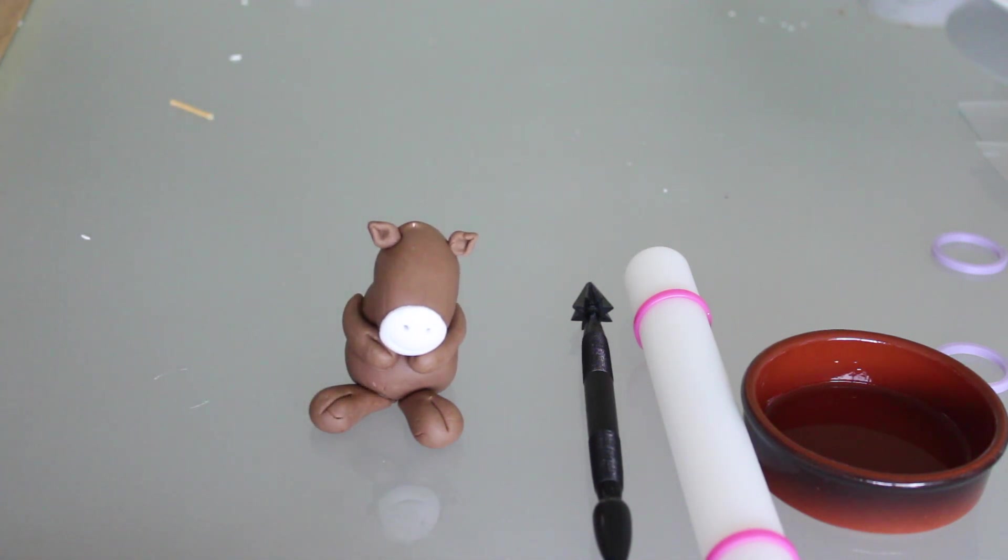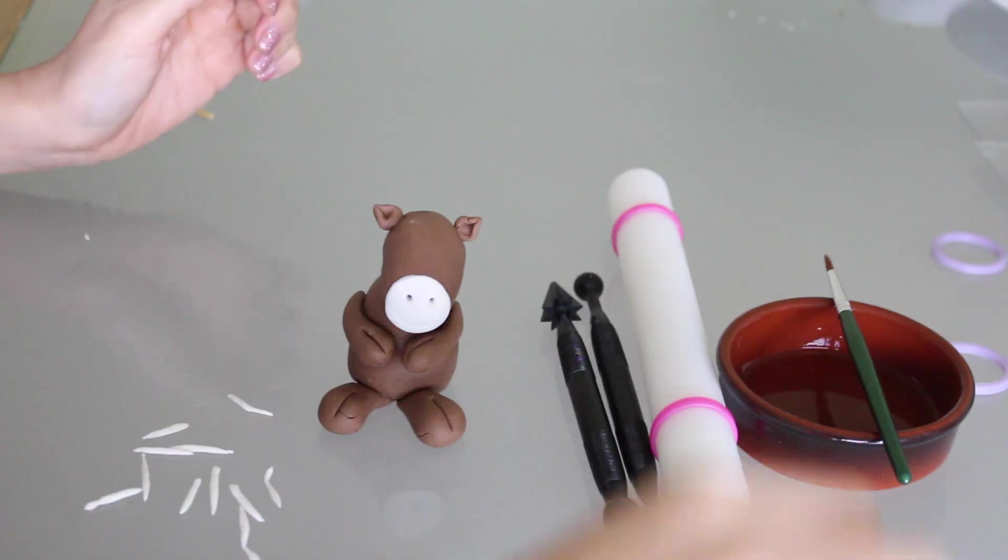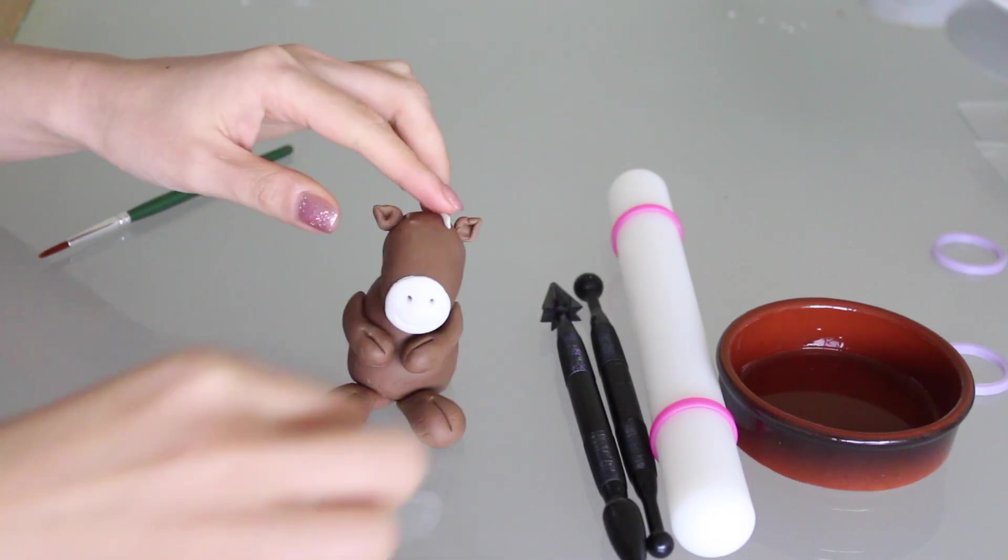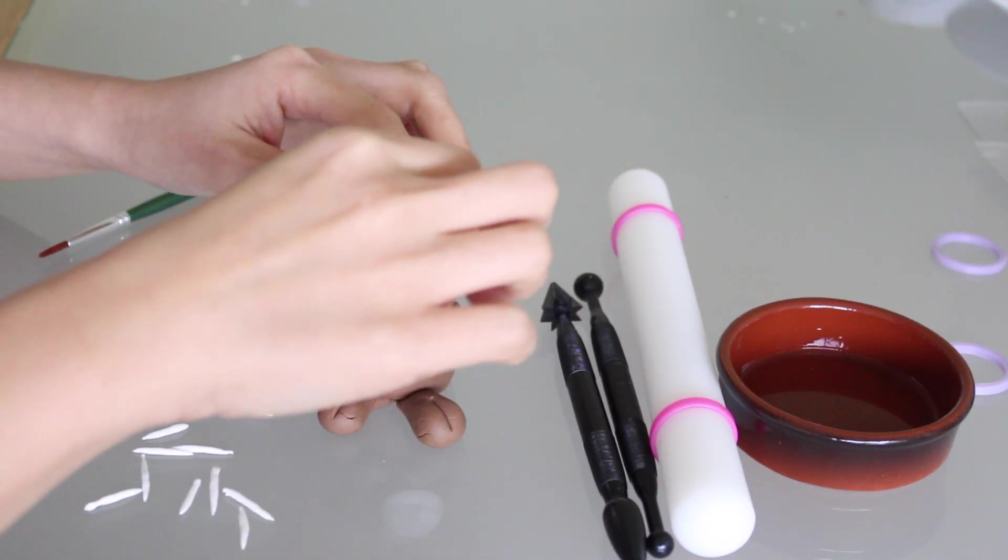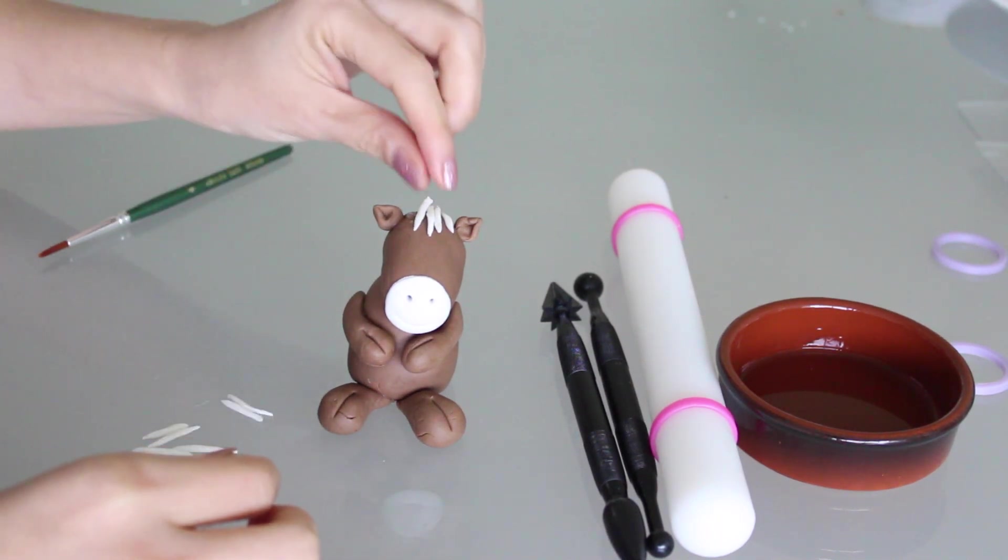And now, here comes my favourite part, giving the horse some hair, or its mane. Roll some white fondant into short strands, and then brush some water or alcohol on the top of the head. Place the white fondant strands on top of the head, and position them any way you like it.